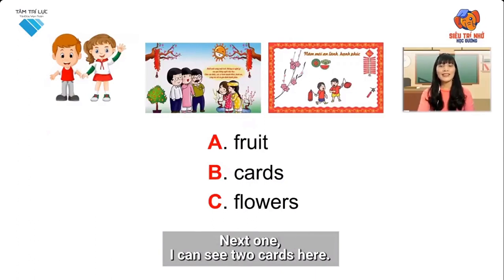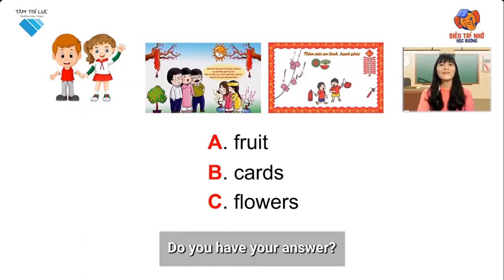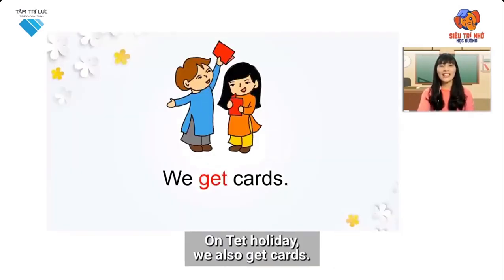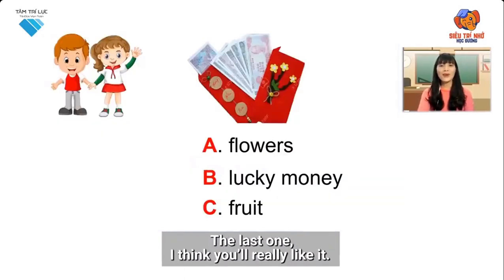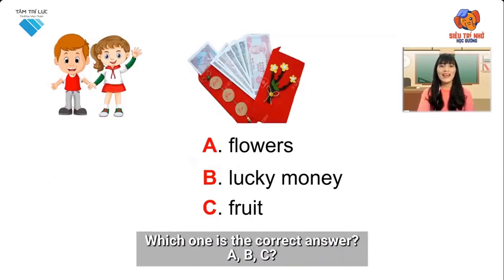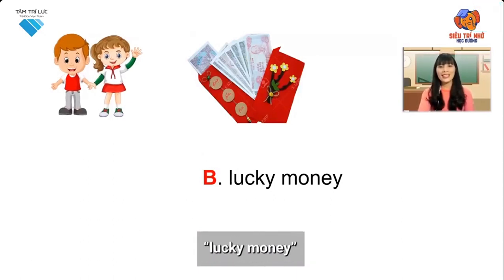Next one — I can see two cards here. Which one do you choose: A, B, or C? Do you have your answer? That's right! B is the correct answer. Well done! On Tet holiday, we also get cards. The last one — I think you'll really like it. That's right — it's lucky money! Which one is the correct answer: A, B, or C? That's right, B is the correct answer — lucky money!